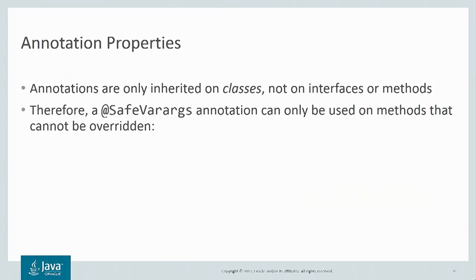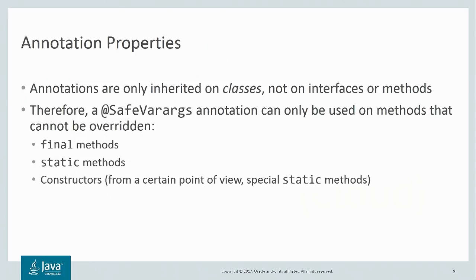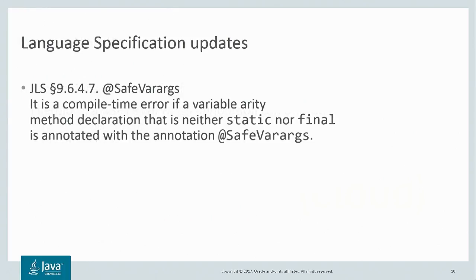Because of the design of the annotation facility, annotations are only inherited on classes, not interfaces or methods. Therefore, the @SafeVarargs annotation can only be used on methods that cannot be overridden — final methods, static methods, and constructors (which from the VM point of view are just very special kinds of static methods). There's another category of methods that can't be overridden: private methods. We omitted those back in JDK 7, but now in JDK 9 we've gotten around to adding them — a very small update to the Java language specification to now also allow @SafeVarargs on private methods.